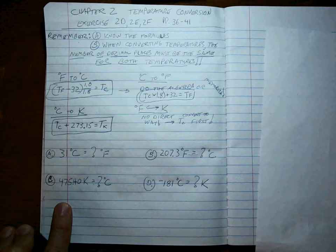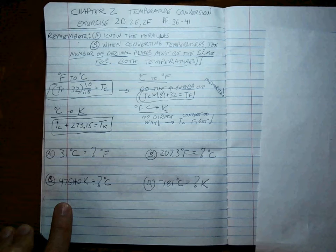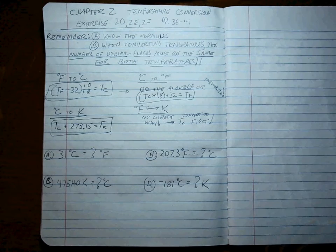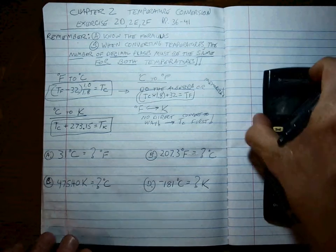Your job is to write these down, do the conversions after hitting pause, and then when we come back, we'll actually do them and see what you get. See if it matches up. All right, so hit pause. Okay, we're back.